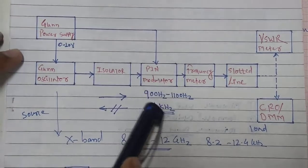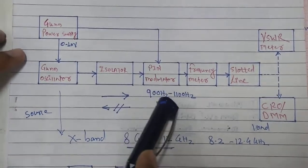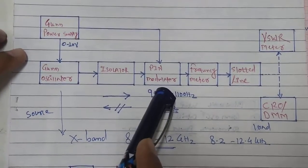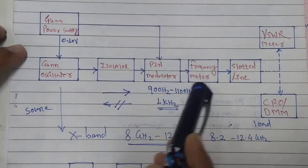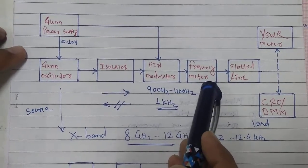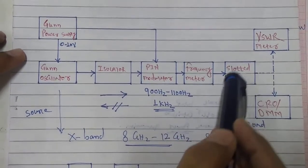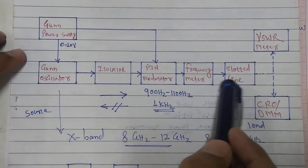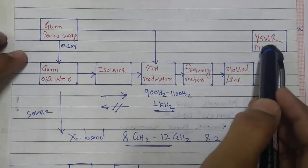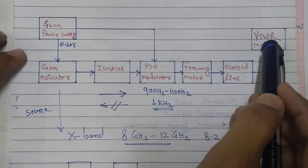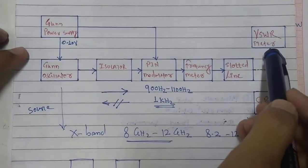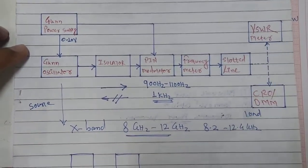We have removed the pin modulator because it is not used for this particular study. We have also removed the slotted line because we have directly connected the signal to the power meter instead of the VSWR meter.